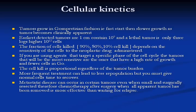Tumors grow in a Gompertzian fashion — fast at first, then slower. The earliest detectable tumors are about a centimeter, already containing 10⁹ cells, and a lethal tumor load is only three logs higher. The fraction of cells killed depends on drug sensitivity and is proportional regardless of tumor burden. Agents targeting a specific cell cycle phase are most effective against cells with the highest growth rate and fewest cells in G0.